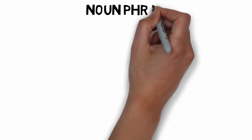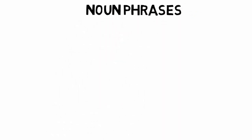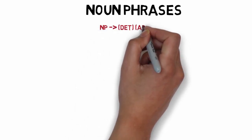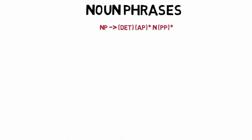First up, noun phrases. The PSR for a noun phrase is: an NP is made up of an optional determiner, only one of them, zero to infinity optional adjective phrases, an obligatory noun, and zero to infinity prepositional phrases.